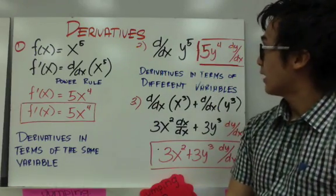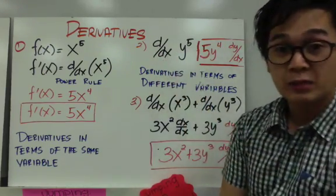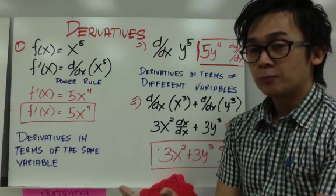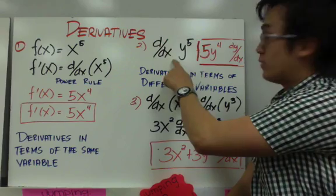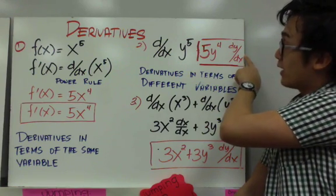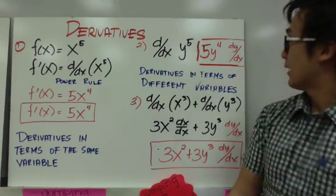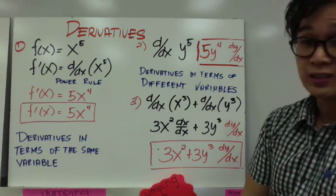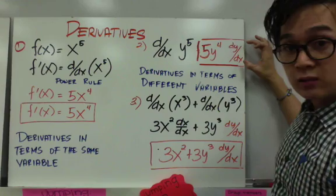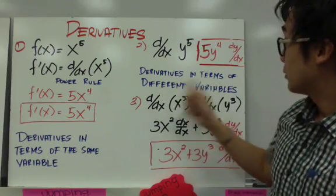Dito naman sa number 2, iba na siya kasi kinuha mo na yung derivative ng y⁵ in terms of x. Syempre, yung y⁵, hindi naman siya x. So, kapag ganyan na yung function na kailangan nyo i-differentiate, gagamitan nyo pa rin siya ng power rule pero yung sagot nyo magiging — baba nyo yung 5 tulad ng power rule, magiging 5y⁴. Pero ngayon, sinulat ko na yung dy/dx kasi I took the derivative of y⁵ in terms of x. Eh, since hindi naman siya x, isusulat na siya as dy/dx. Kaya, yung number 2 — derivative of y⁵ in terms of x — magiging 5y⁴ dy/dx. Huwag nyo kalilimutang ilagay yung notation na ito kasi ito yung nag-i-indicate na nag-derive mo yung function in terms of x kahit y yung nakikita nyo. Ito yung tinatawag na derivatives in terms of different variables.